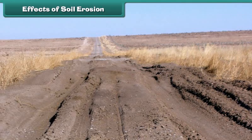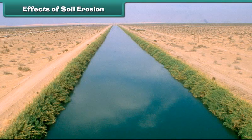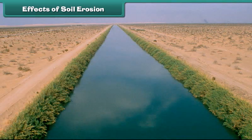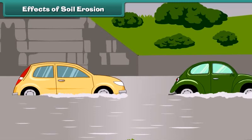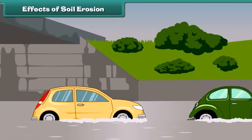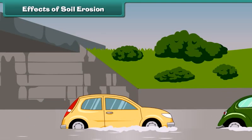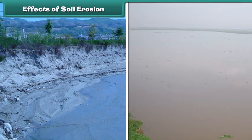Due to soil erosion, soil shifts and accumulates on roads and streets, blocking driving and resulting in accidents. It also blocks irrigation canals and increases the risk of flooding. The eroded soil deposits in water resources like rivers and lakes, polluting them.